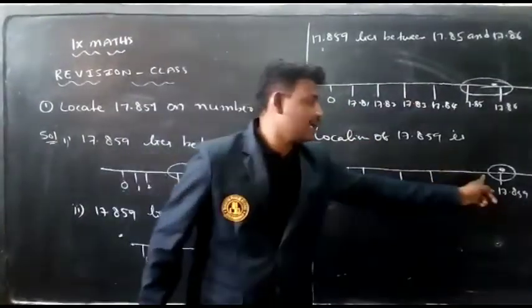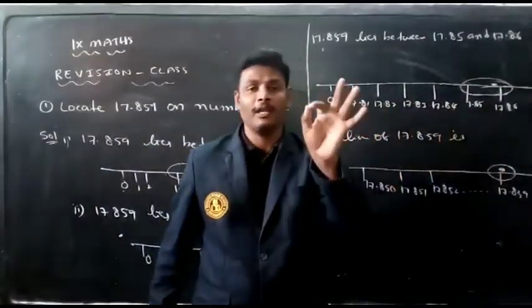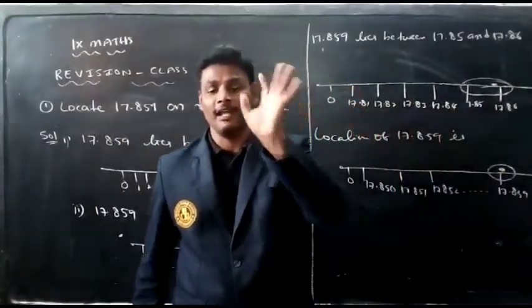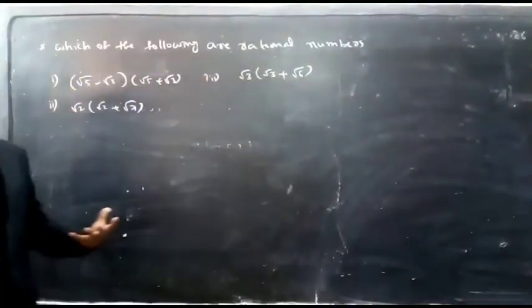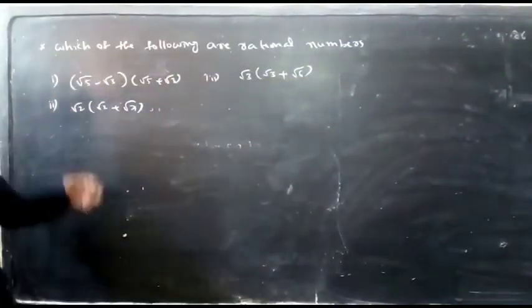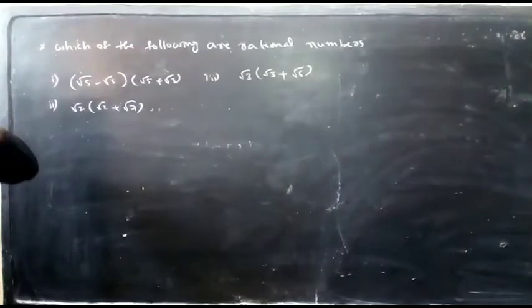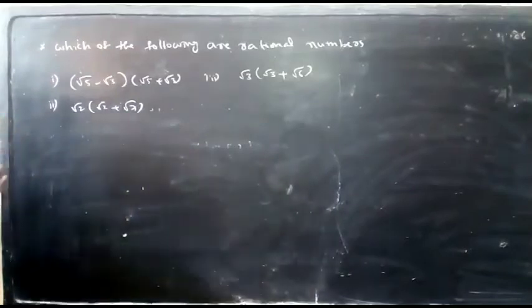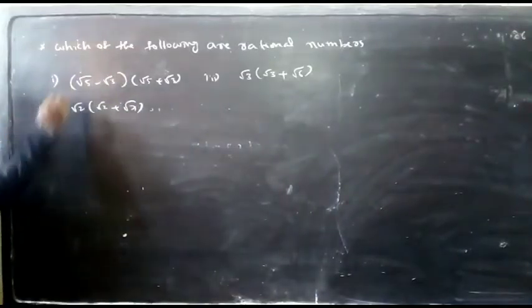This is the exact location of 17.859. Our next question in this revision class: which of the following are rational numbers? Here is the solution.